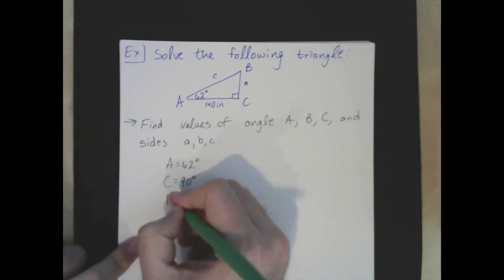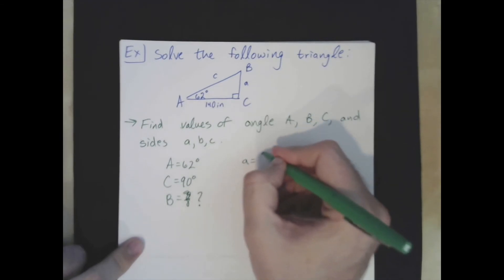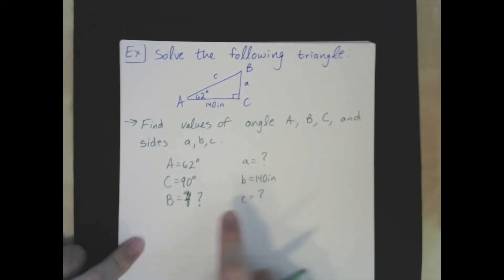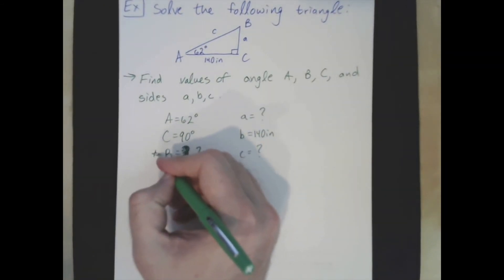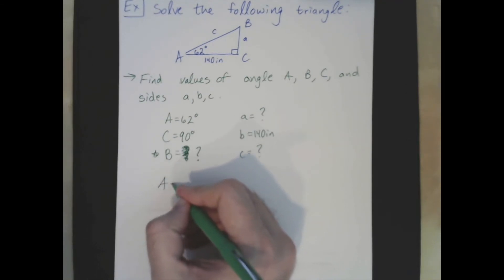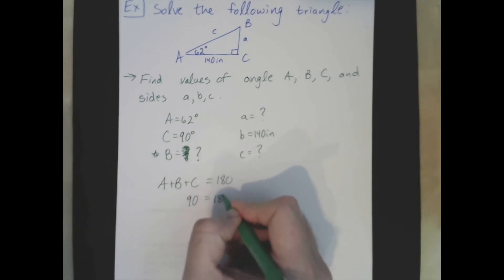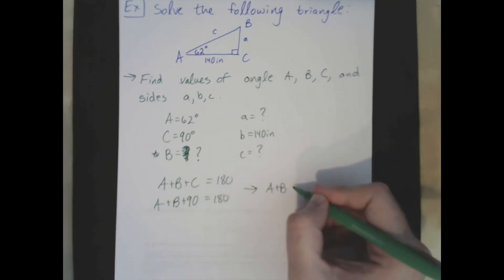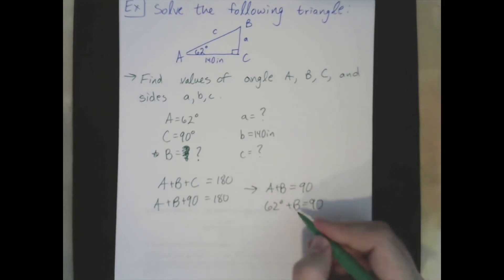We don't know angle B and we don't know sides little a or little c. Let's start with the easy one: angle B. Because A plus B plus C = 180° and C = 90°, that gives us the complementary rule A plus B = 90°. Since A = 62°, that means B = 28 degrees.